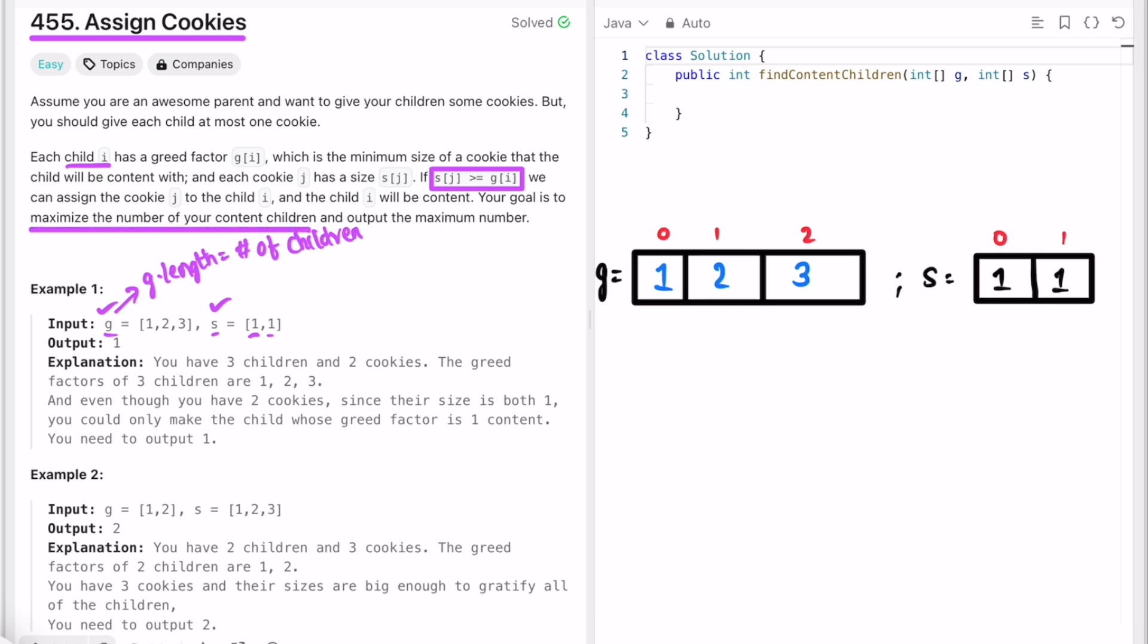Our task is to maximize the number of children and output that number. You have to make sure that the maximum number of children get cookies. One important condition is that each child is given at most one cookie.